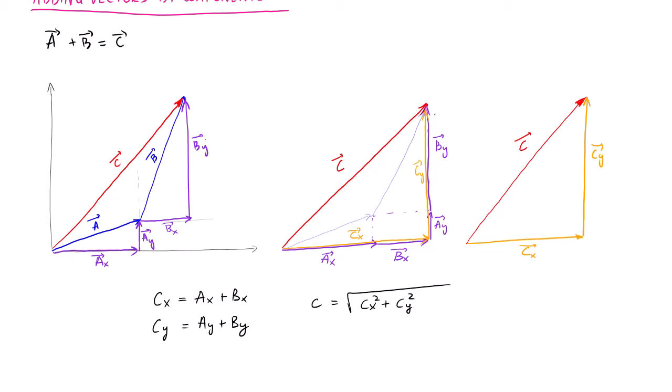Apparently I had quite a hard time drawing this little triangle in straight lines. Anyways, all I wanted to show you is that the Pythagorean theorem tells us that C is the hypotenuse — hypotenuse squared equals the X and Y components squared and added together. Now to find the direction of vector C, we need to find this angle — let's call it theta.